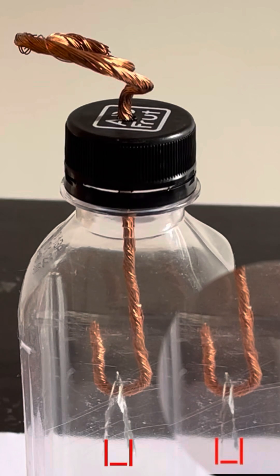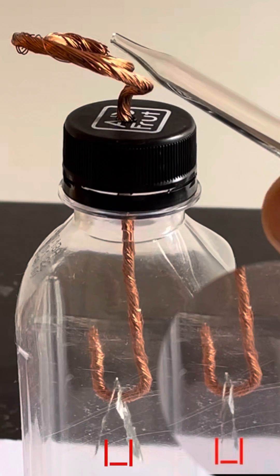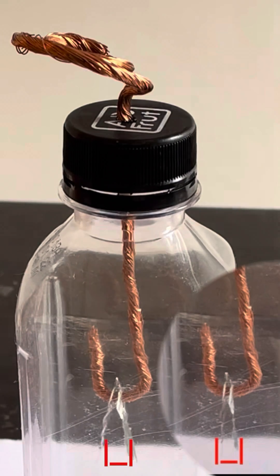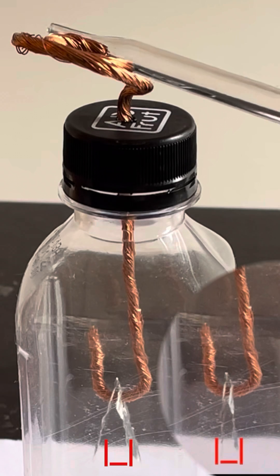As we continue to do the touching of the charged glass rod onto the head of the electroscope, the divergence gap between the leaves increases.